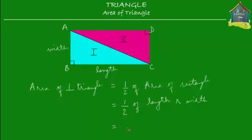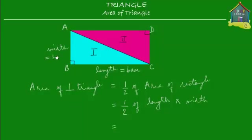When we talk about triangles, we don't talk about length and width. What we do talk about is two other things called base and height, which we learned in a previous lesson. So if we consider triangle ABC and we call BC the base, then the height of this triangle would be the side that's perpendicular to the base. In this case, the line perpendicular to the base is AB, which is the width. So the height of this triangle is AB.